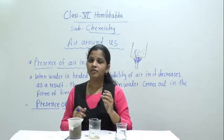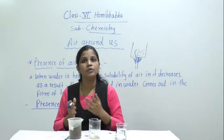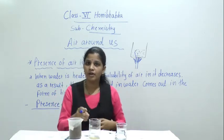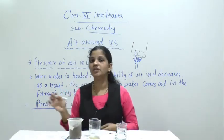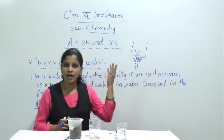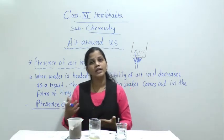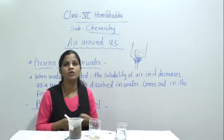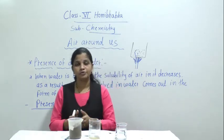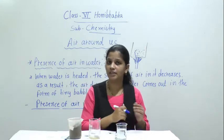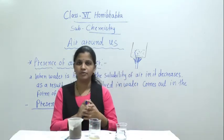Mostly in the rainy season, earthworms come out. Why? Because water goes into the soil — the air present between the soil particles comes out, and water takes the place of that air. So earthworms do not get enough oxygen to breathe, and that is why they come out in the rainy season. To prove that air is present in soil, an activity is given in your textbook.